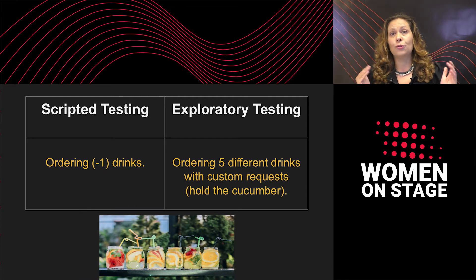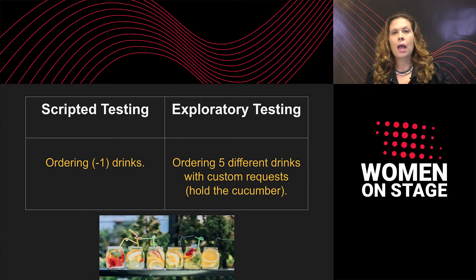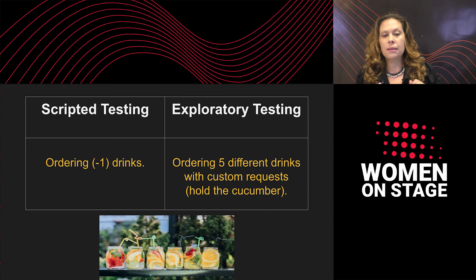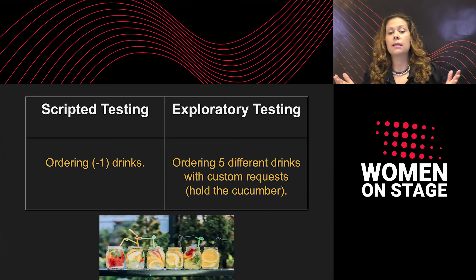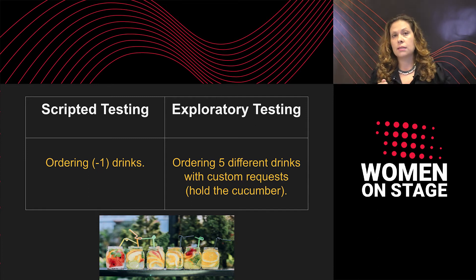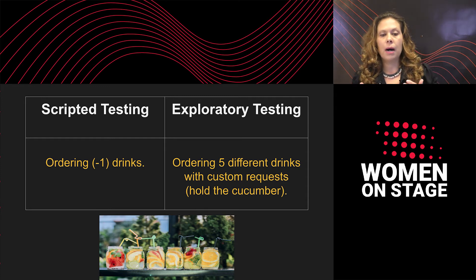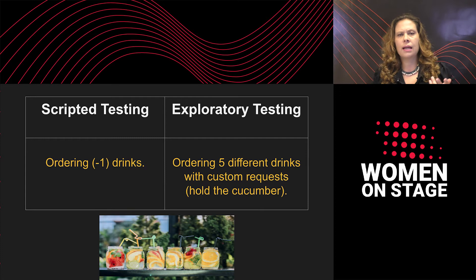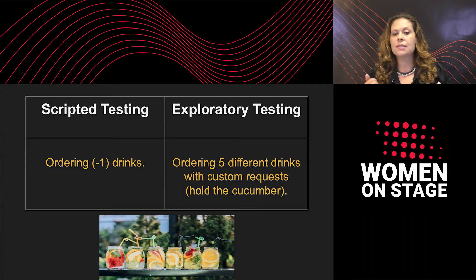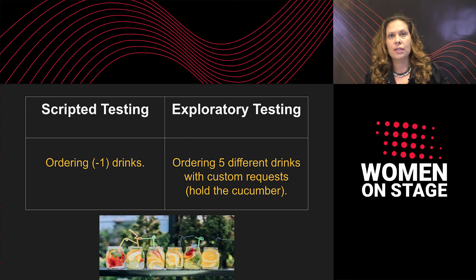Let's start with ordering drinks. During scripted testing, one of the possible test cases would be ordering a negative number of drinks — say minus one. We would then expect the bar to issue an error message saying something like: the number of drinks you chose is invalid, please choose a positive number of drinks.